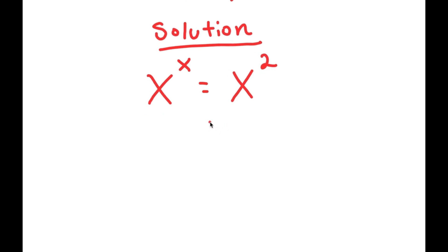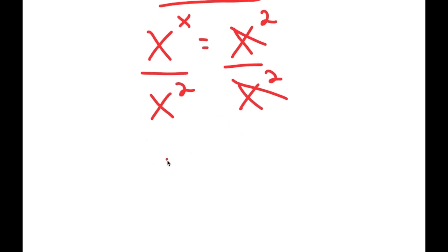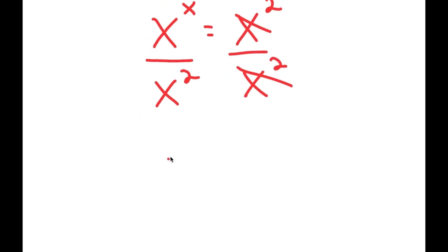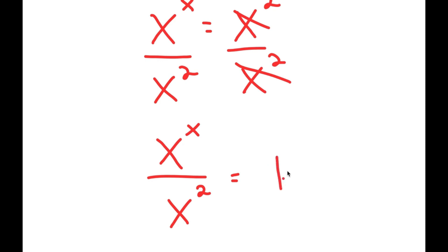I'm going to first start by dividing both sides by x to the power of 2. So I have x to the power of x over x to the power of 2, is equal to x to the power of 2 over x to the power of 2. And x to the power of 2 over x to the power of 2 — these two cancel out. So now I'm left with x to the power of x over x to the power of 2 is equal to 1.